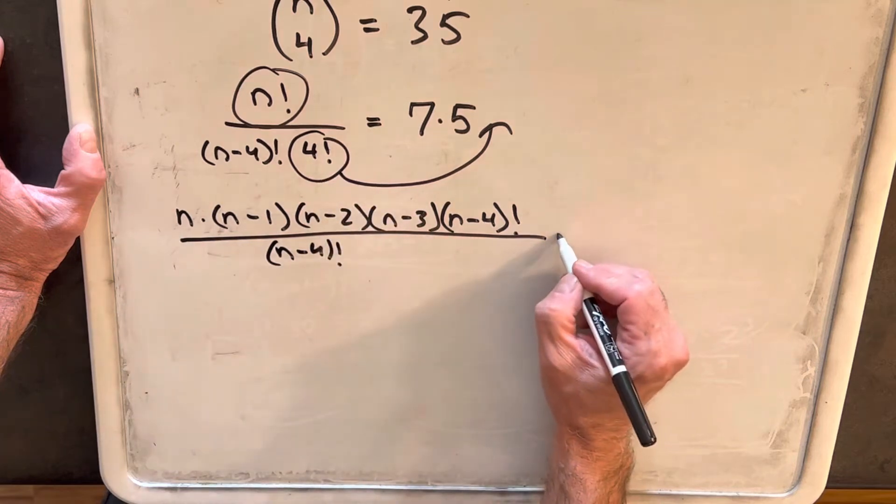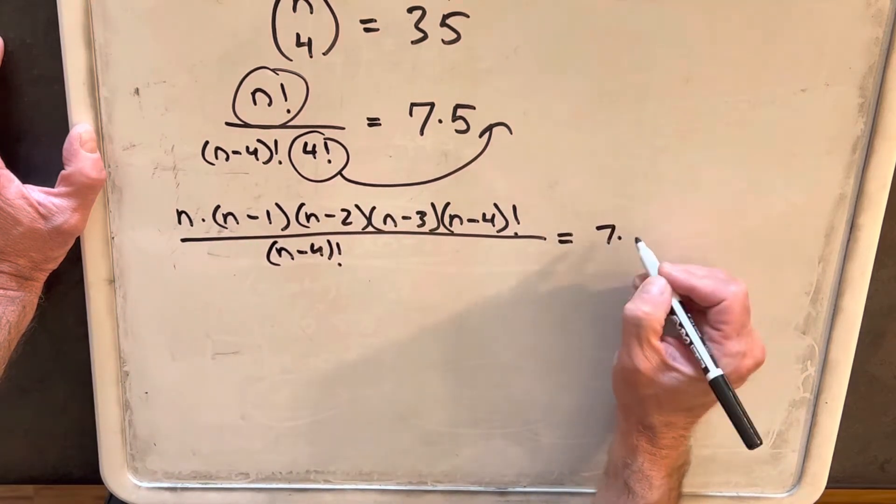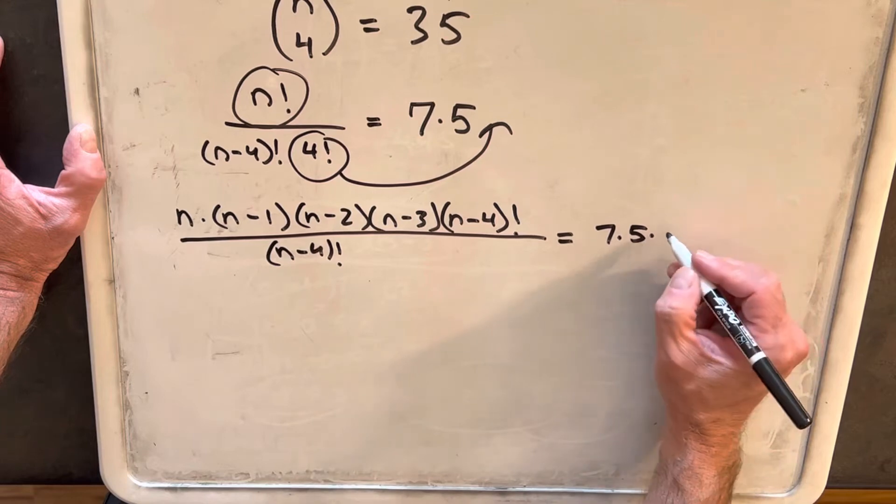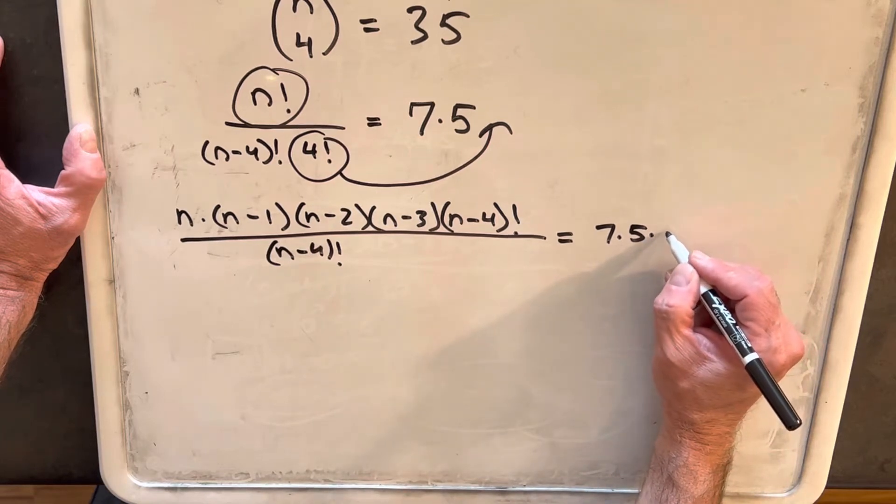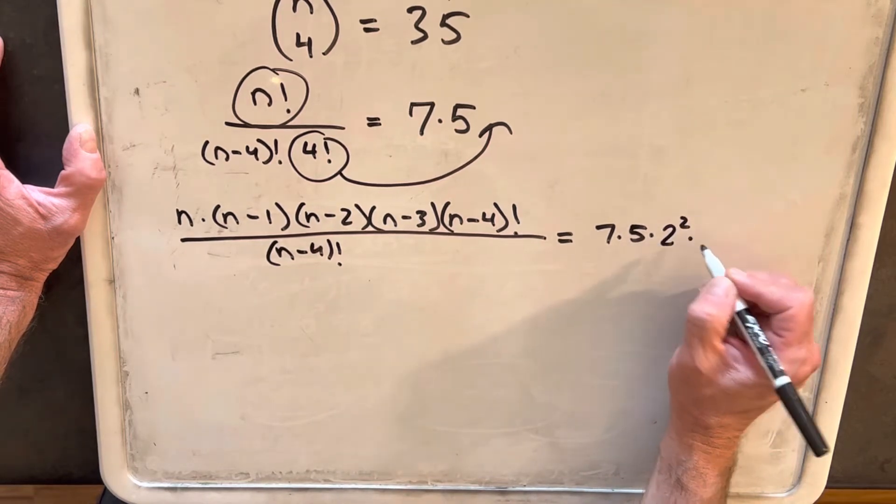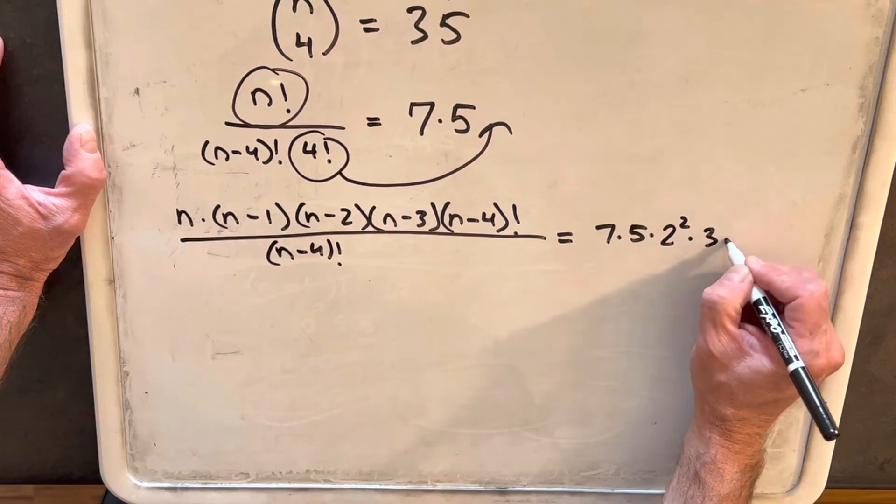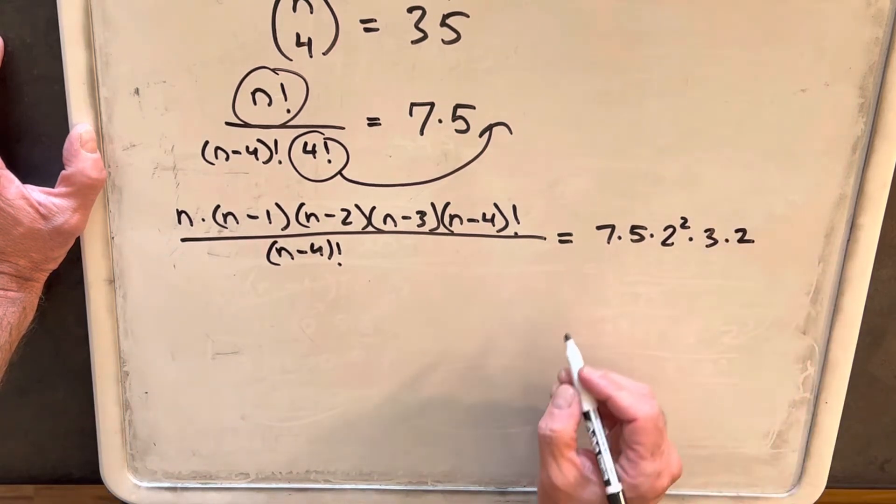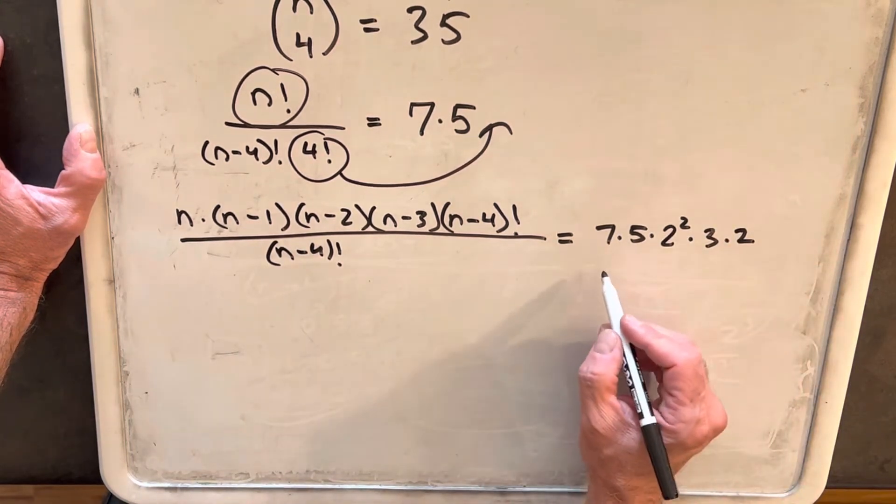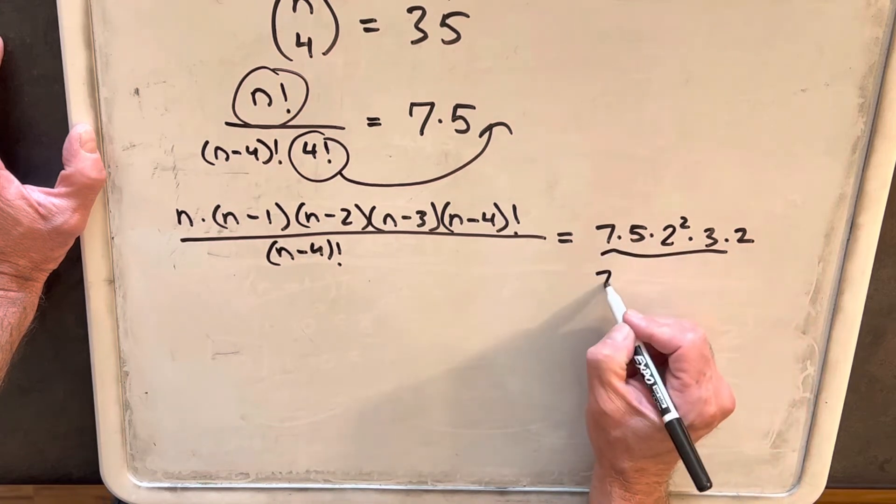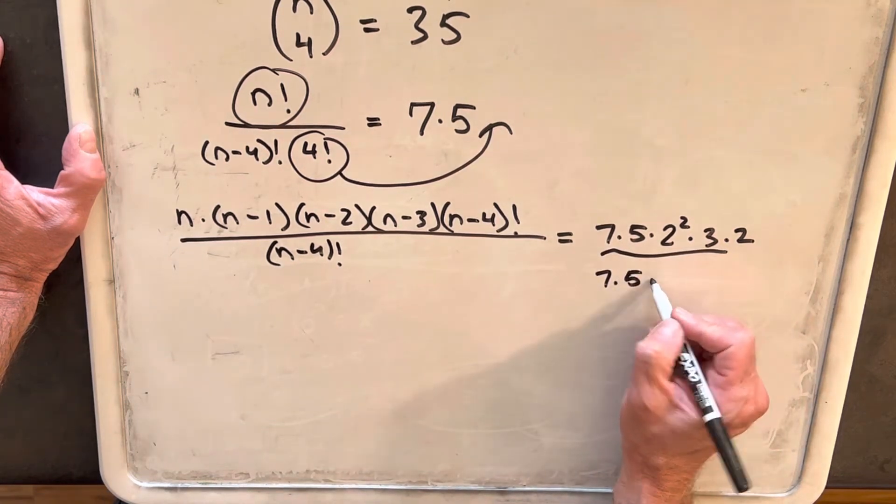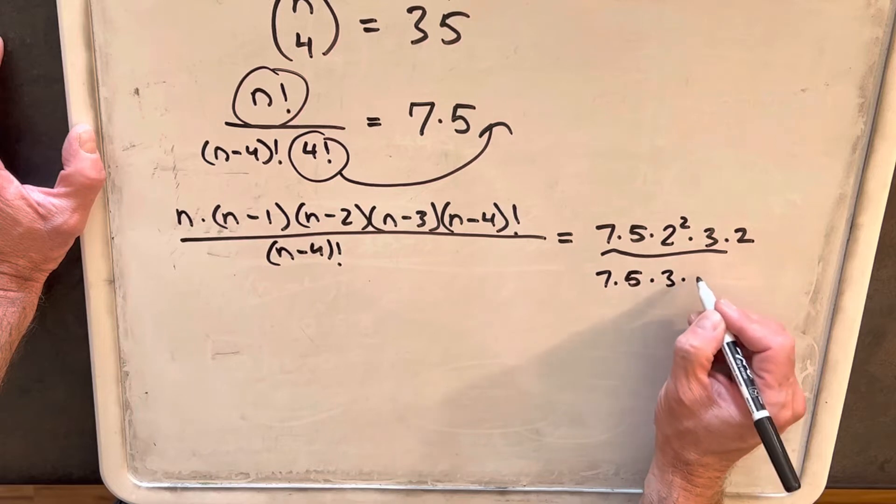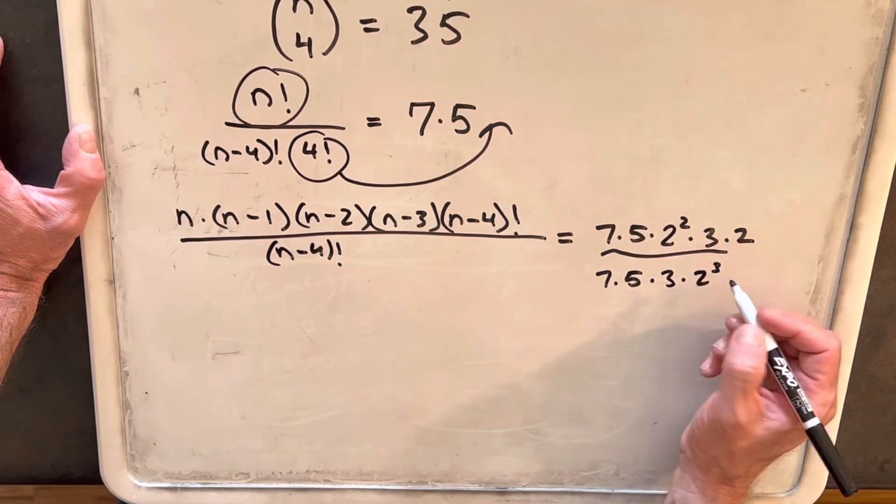This 4 is moved to the other side, so we're going to rewrite this as 7 times 5. I'll write this out. 4 I'm going to write as 2 squared times 3 times 2. And then let's just clean this up and get it to the prime factorization, which is going to be 7 times 5, times 3, times 2 to the third.